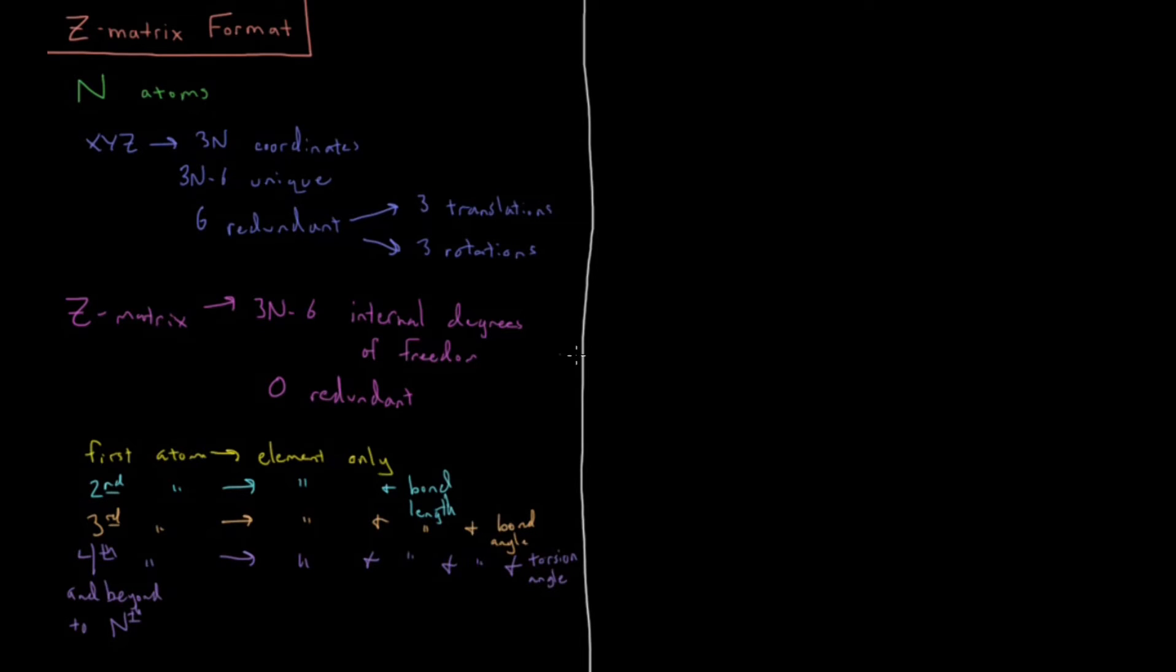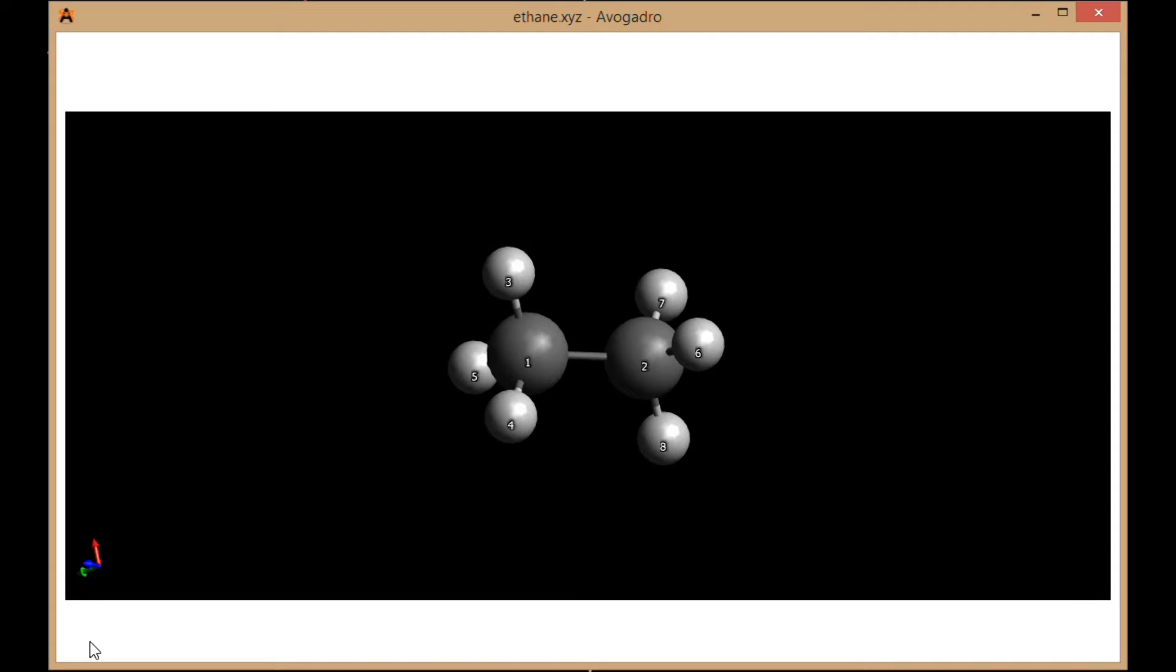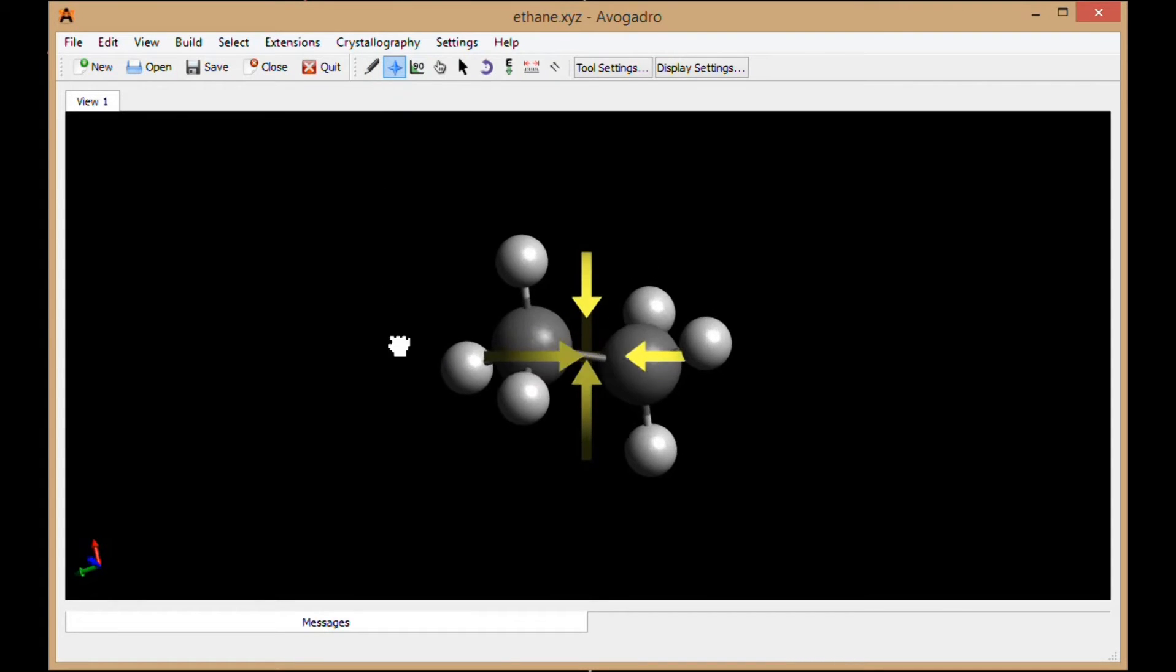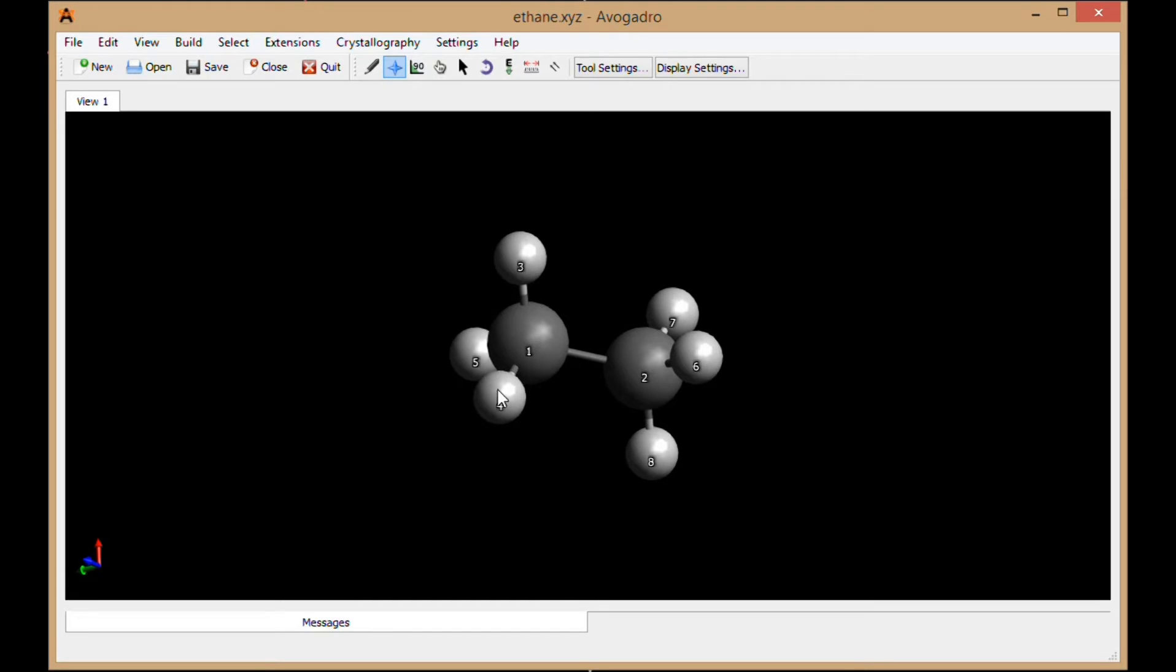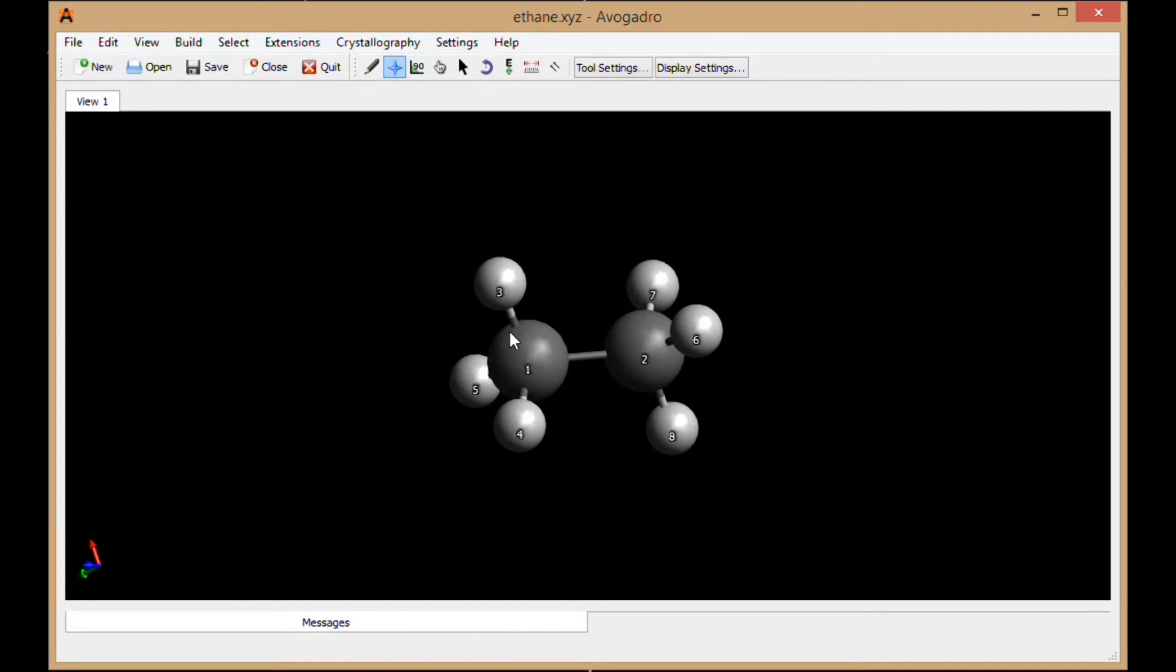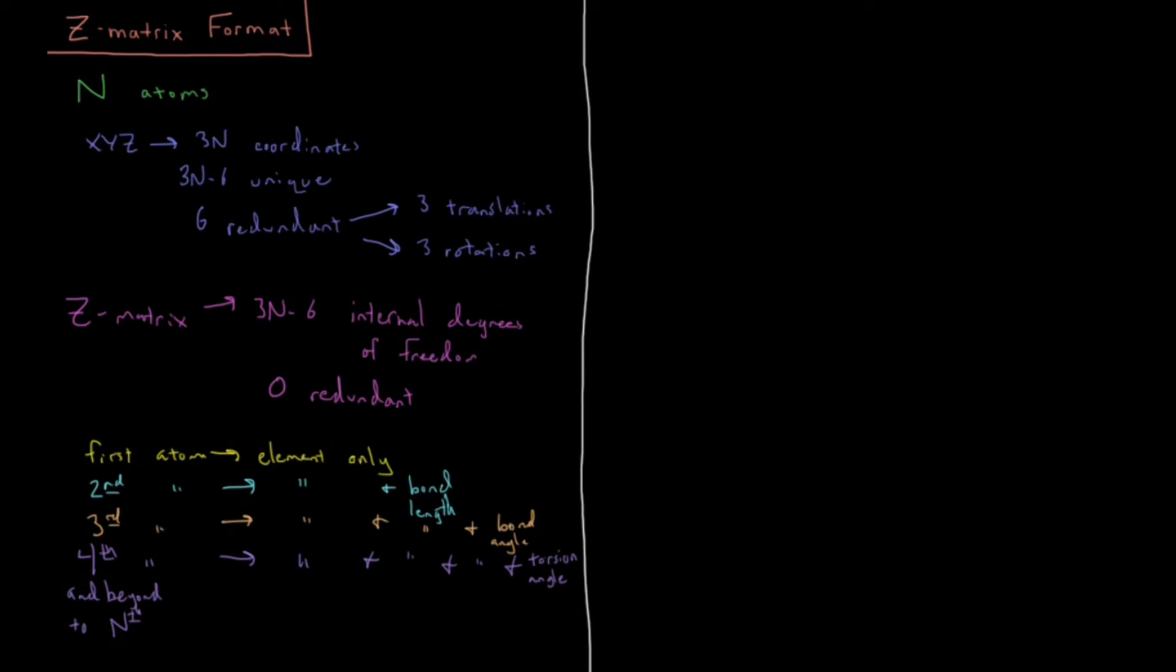Let's try to do an example here of a particular Z matrix. Looking in Avogadro, I've got an ethane molecule here. I have two carbons, three hydrogens over here, three hydrogens over here. If I declared my atoms in this order, I would have to define a reasonable set of bond angles, bond lengths, and torsion angles to describe this geometry. First up, I'm going to define our first carbon atom. So we have C, that's our first line, element only.